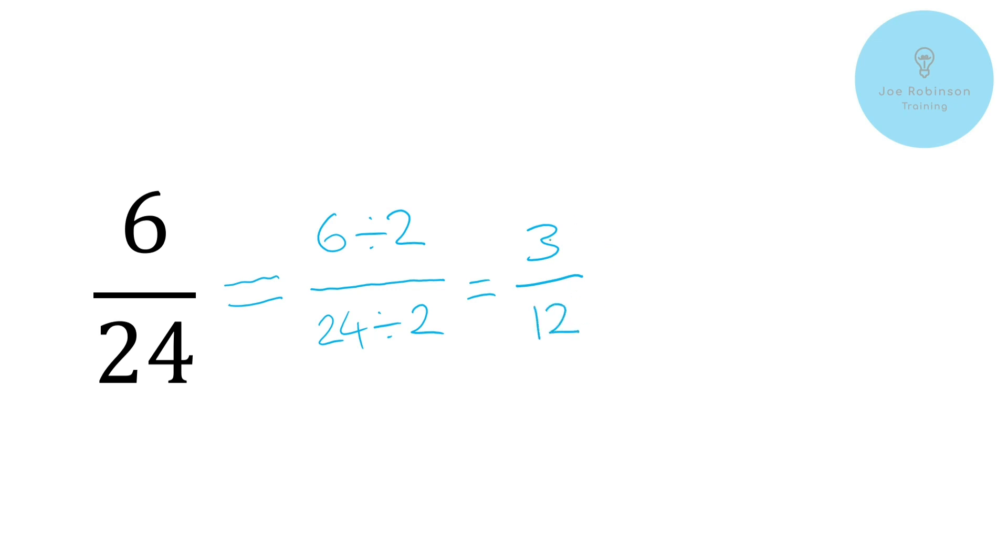So can you see there that we have simplified this, we've made the numbers a little bit smaller. So 6/24ths can become 3/12ths. Now it's really important to understand, and we're going to illustrate this in a moment, that this fraction here and this fraction here both represent exactly the same number. There is no difference between those two.